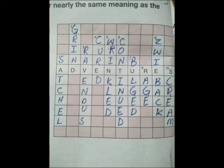The next one is extreme anger — bohat zyada gussa. To hum is ke liye word use karenge: rage, R-A-G-E. The next one is ninth, a type of bread — bread ki hai qisam. To zwieback ho jayega, Z-W-I-E-B-A-C-K.